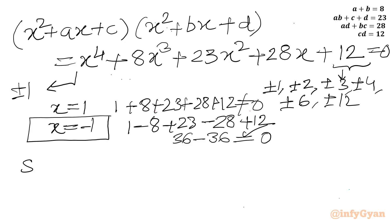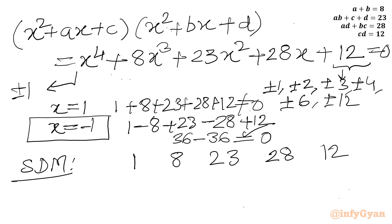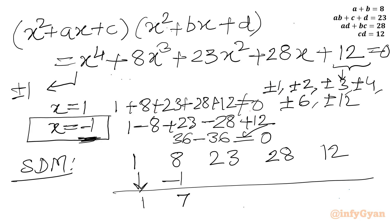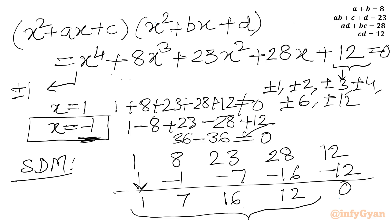Now I will use the Synthetic Division Method. Let us write all the coefficients: 1, 8, 23, 28, 12. Using base solution minus 1: bring down 1, then minus 1 times 1 gives minus 1, giving 7; minus 1 times 7 gives minus 7, giving 16; minus 1 times 16 gives minus 16, giving 12; minus 1 times 12 gives minus 12, remainder 0. So x equals minus 1 is one solution, and x plus 1 is one factor. Here we have the coefficients for a cubic equation.